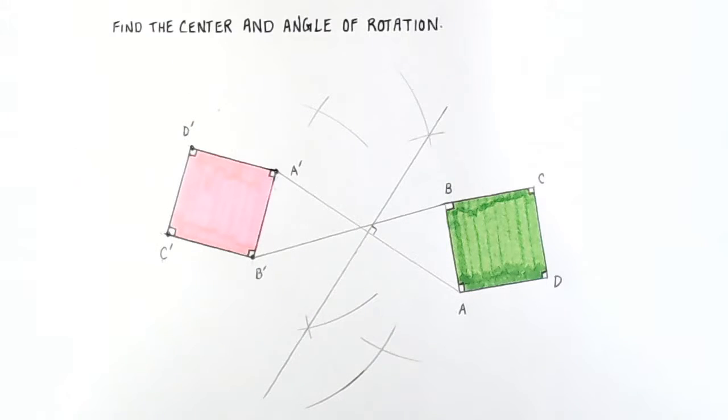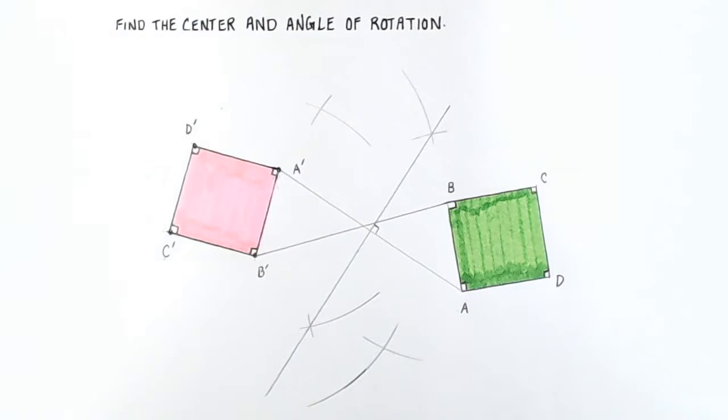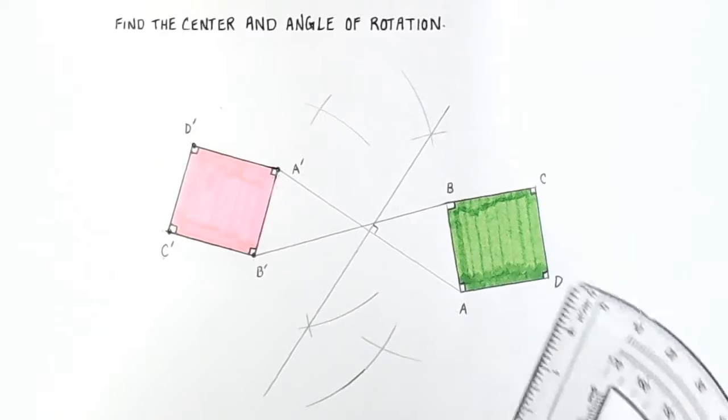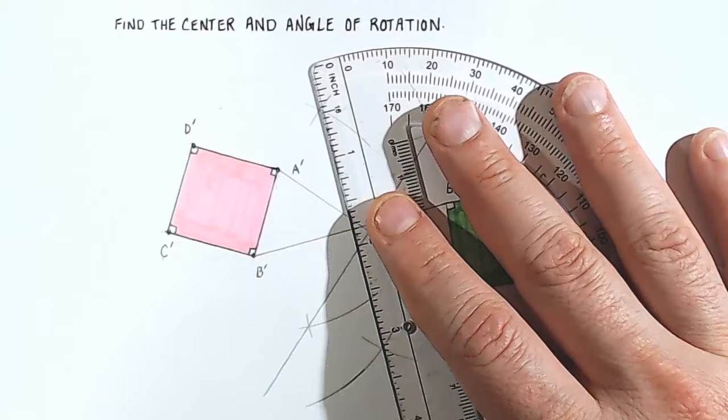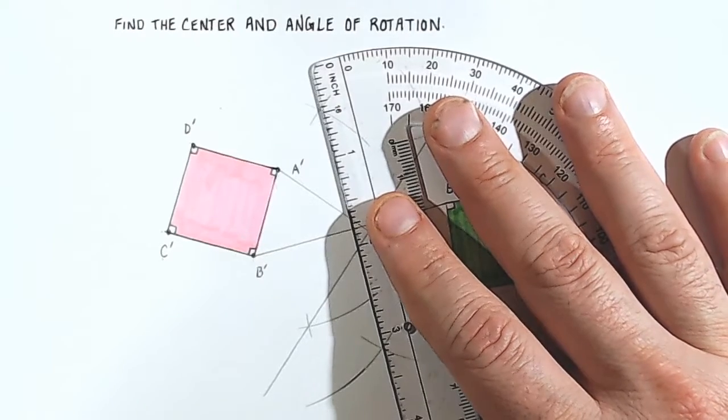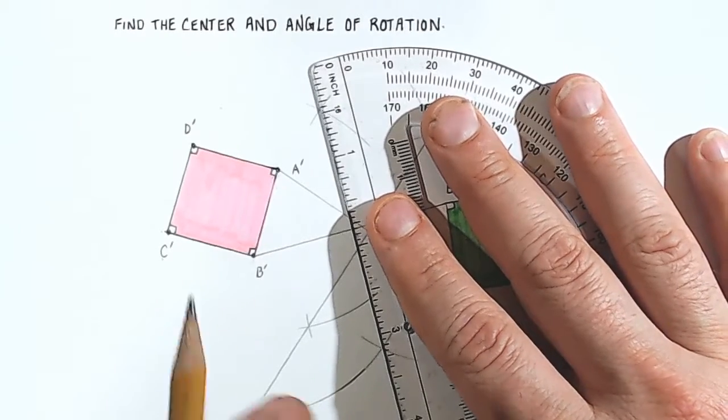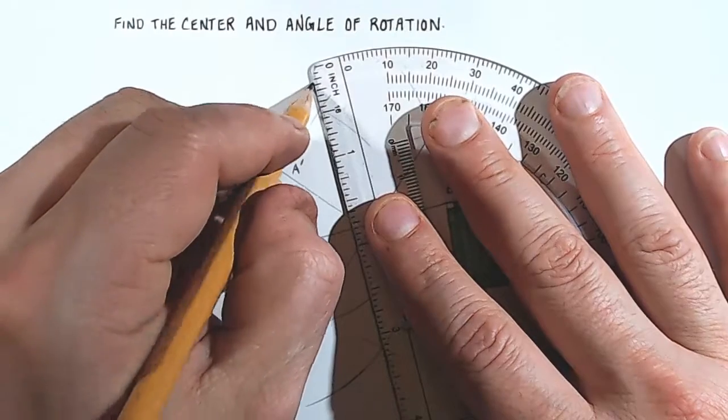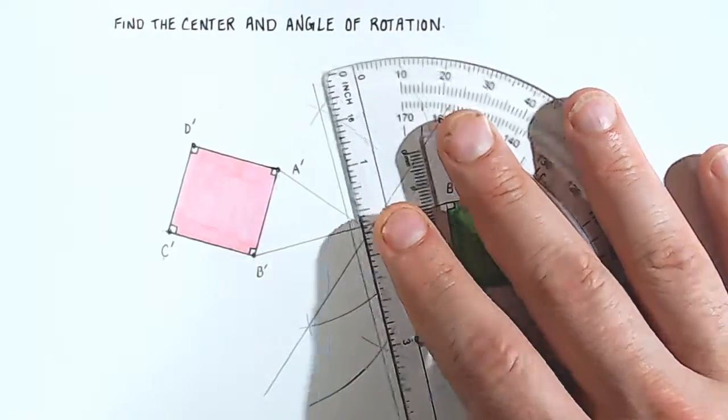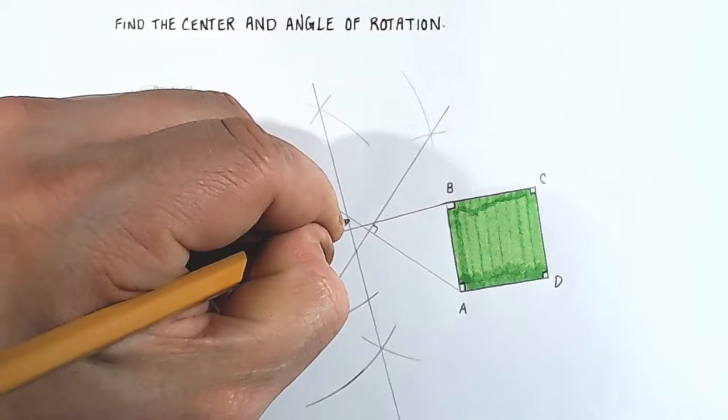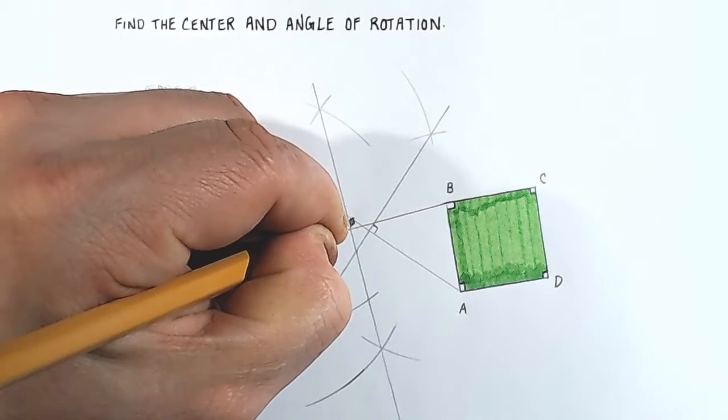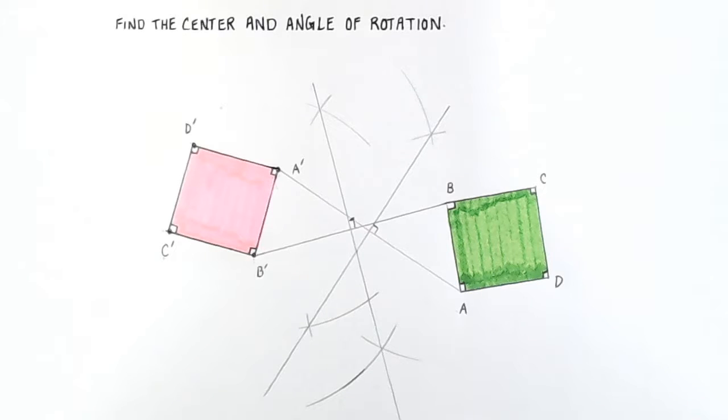So we just go back to B prime and extend out that arc more right there. Okay, so you have two overlapping arcs. And what we're going to do now is connect those two points to form another perpendicular bisector. This time our perpendicular bisector is going to be with respect to B, B prime, that line segment B, B prime. Okay, so now with respect to B, B prime, I've constructed a perpendicular bisector.